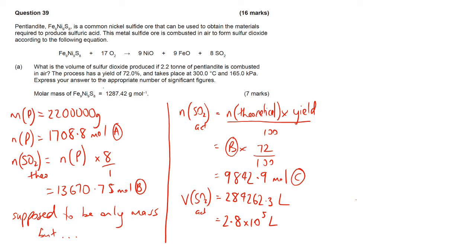It does say the appropriate number of significant figures and here you've only given two significant figures in the 2.2 tons so you give it two significant figures there, 2.8 times 10 to the 5 liters. So that's how you use the yield and apply it to a value, not just calculate the yield.